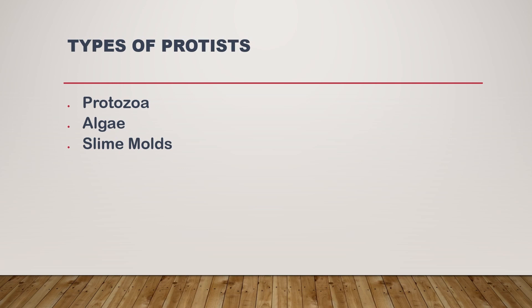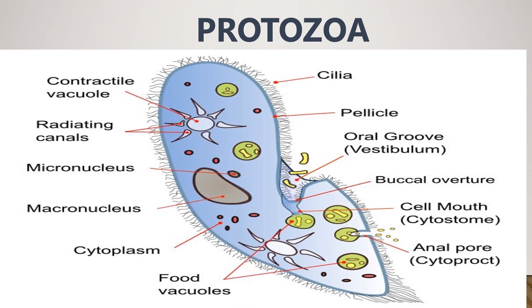There are three types: we have the protozoa, the algae, and the slime mold. The protozoa are single-cell protists and are popularly animal-like in behavior. They can be further categorized into flagellates, ciliates, amoeba-based, and sporozoa.